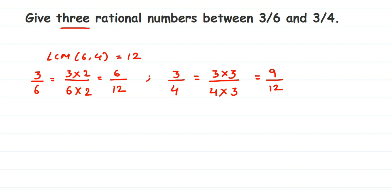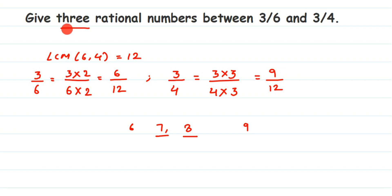Now we have 6/12 and 9/12. Looking at the numerators, we have 6 and 9. Between 6 and 9, we only get 7 and 8 — just two numbers. But the question is asking us to find three rational numbers, and we only got two. So what do we do?